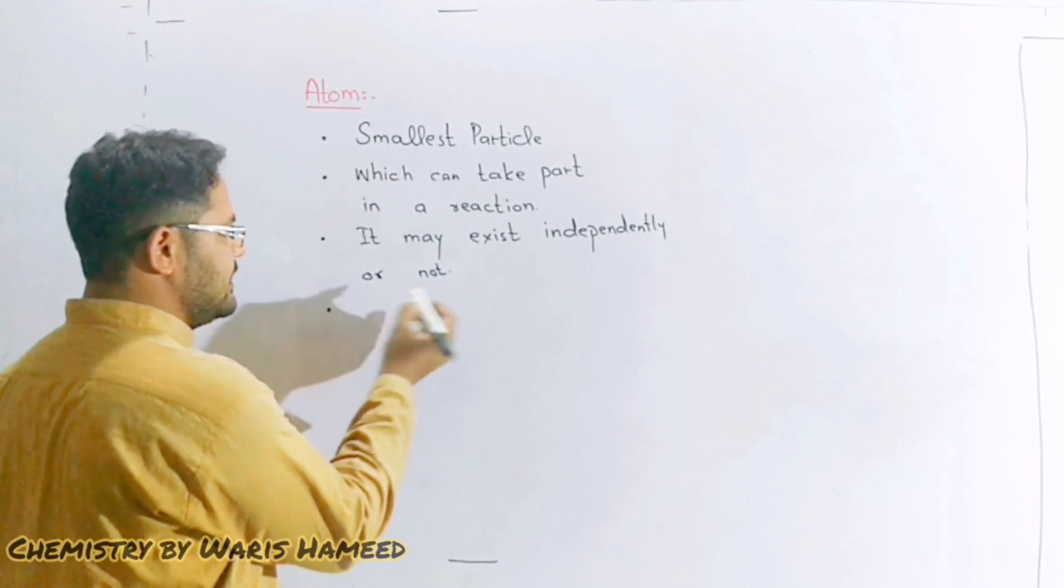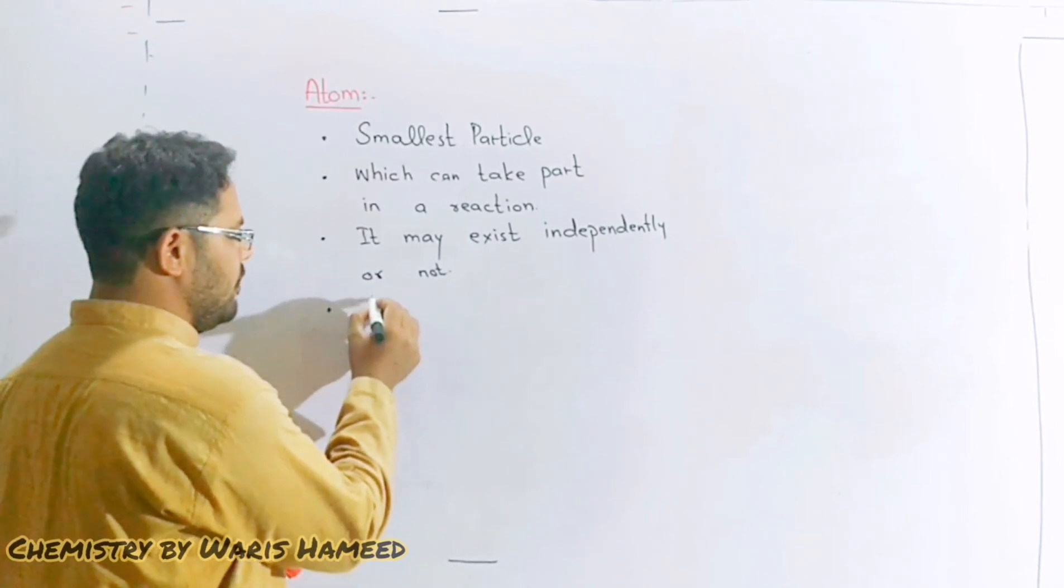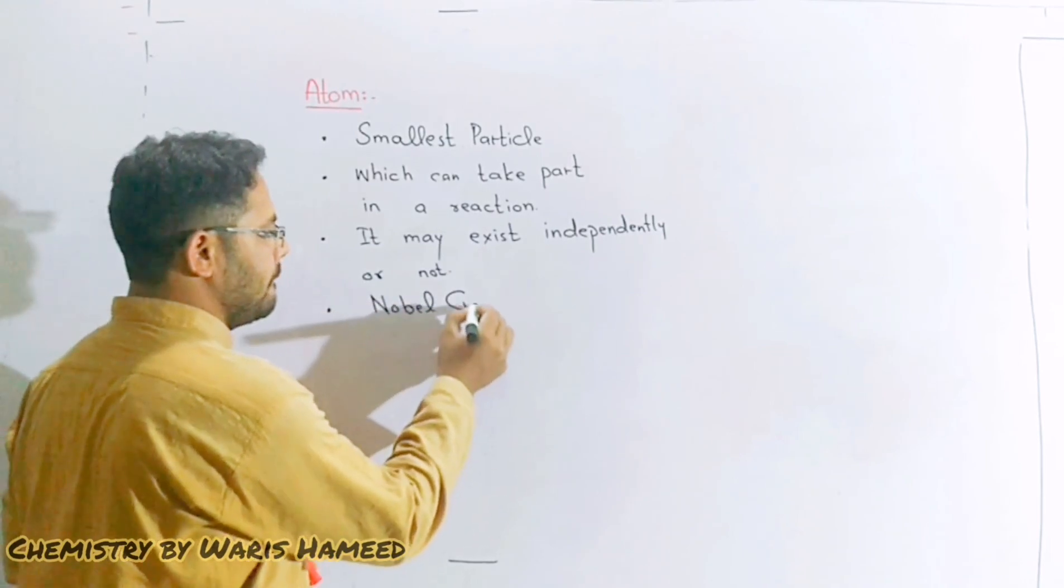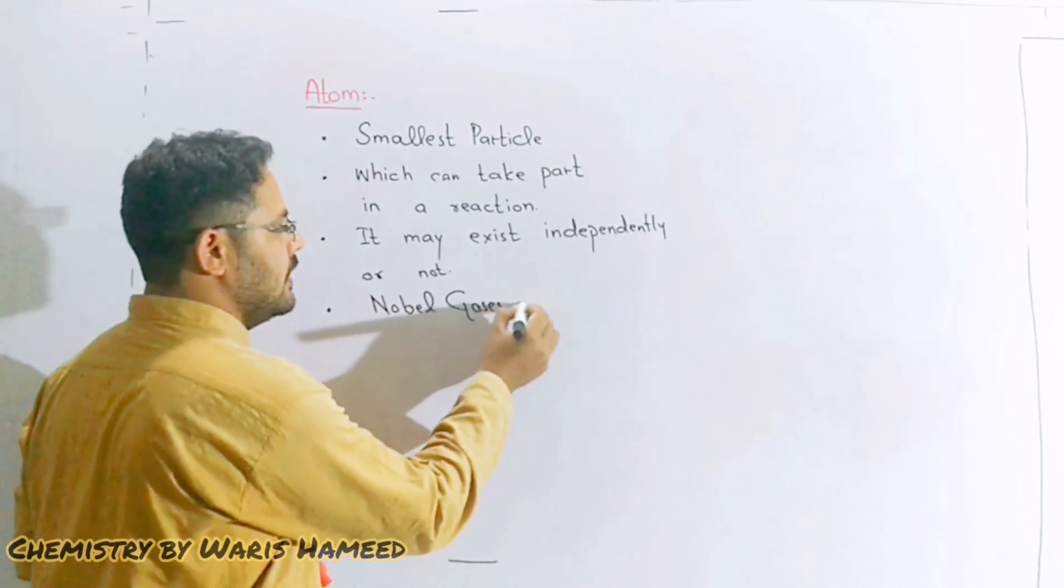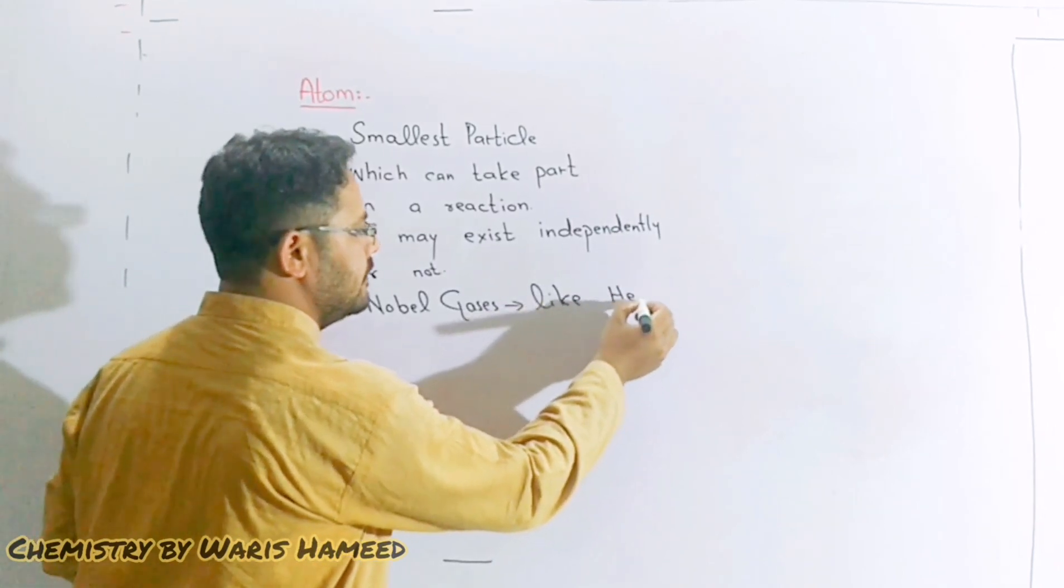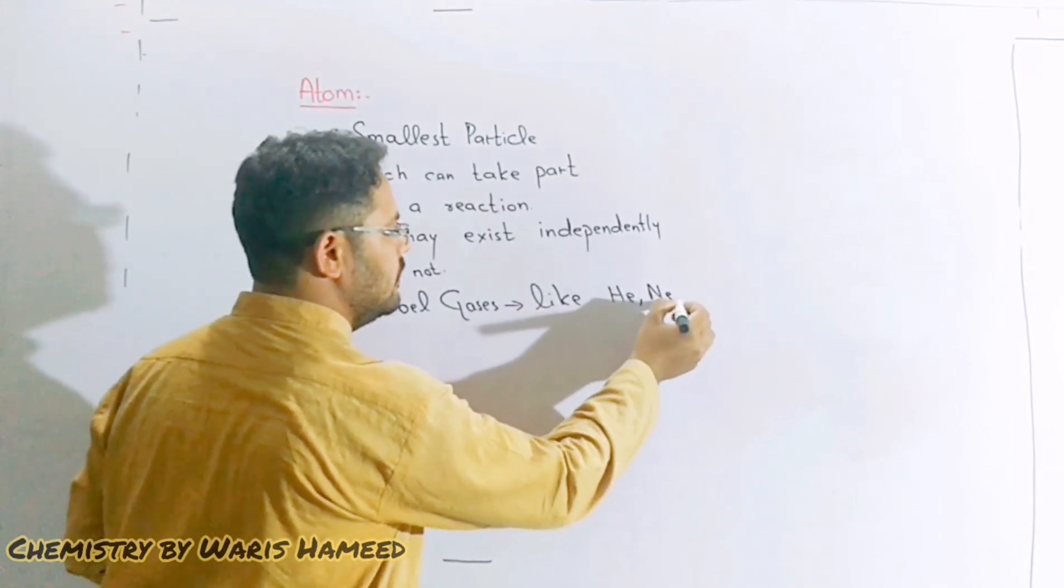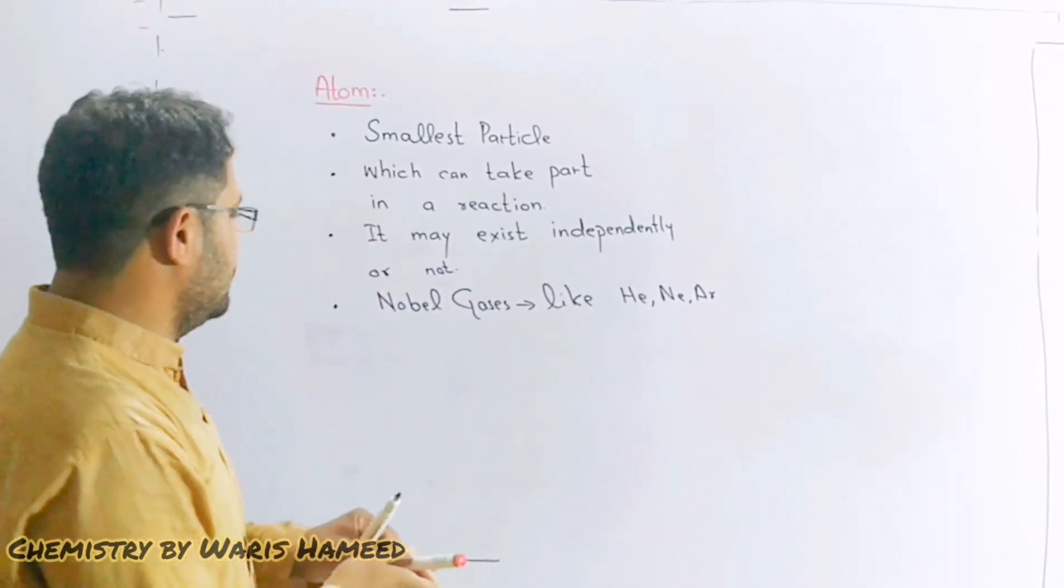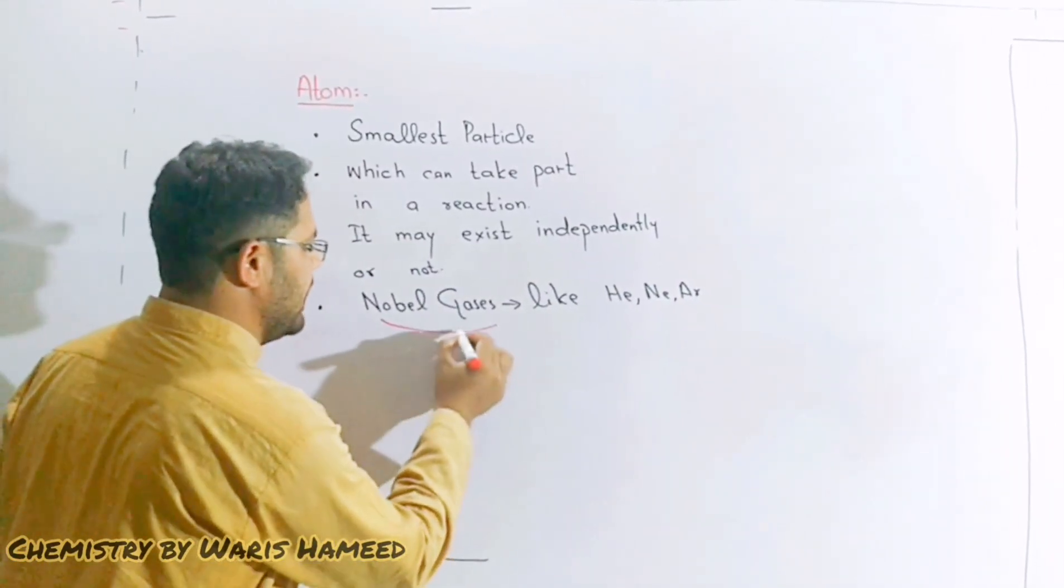The atoms which exist independently are noble gases like helium, neon, or argon. These atoms can exist independently.